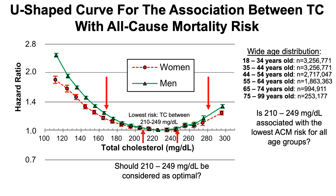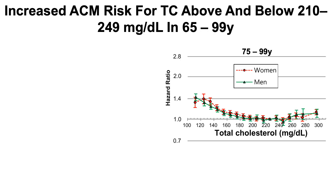First, 210 to 249 is associated with the lowest risk of death for all causes in men and women 75 to 99 years of age. Notice here that this curve is more flat than the curves we're about to see. Also notice that lower values — in this case below around 140 — seem to have a higher risk of death for all causes compared with very high levels, such as 280 or 300.